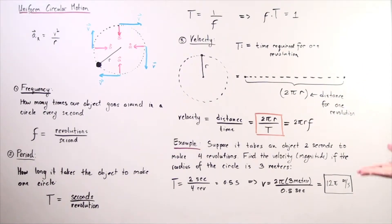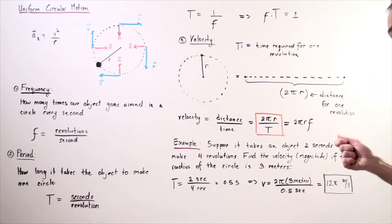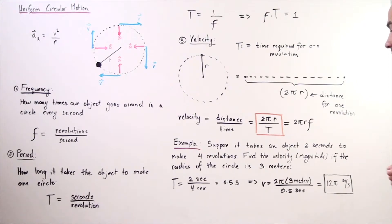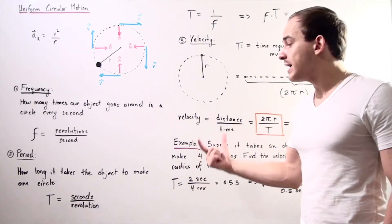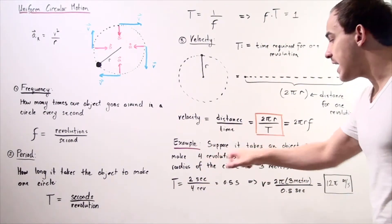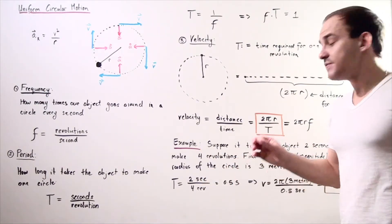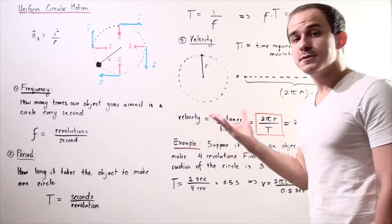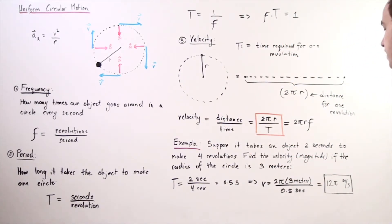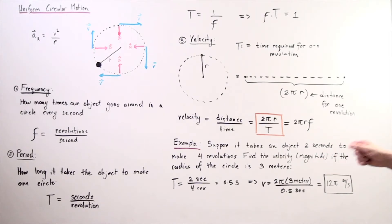Let's look at an example. Suppose it takes an object 2 seconds to make 4 revolutions. Find the magnitude of velocity if the radius of the circle is 3 meters. First, find the period: T = 2 seconds / 4 revolutions = 0.5 seconds per revolution. Then, using our speed formula: v = 2π × 3 / 0.5 = 12π meters per second.